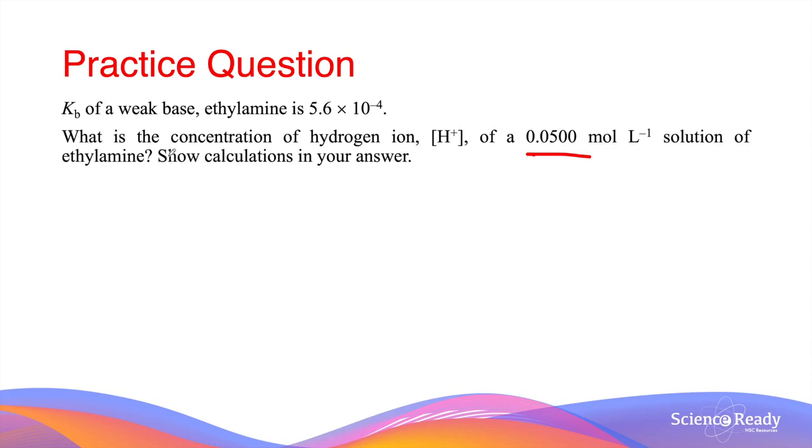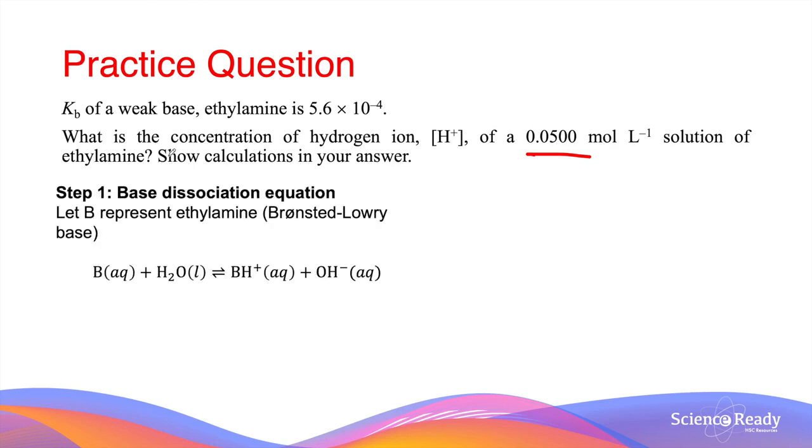For questions like these, the first step is to write an equation as well as an expression for the Kb or base dissociation constant. In this case, ethylamine is an organic base, but for now we can simply use the letter B to represent the base.